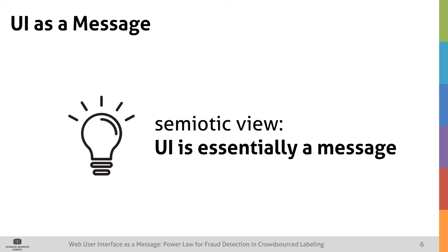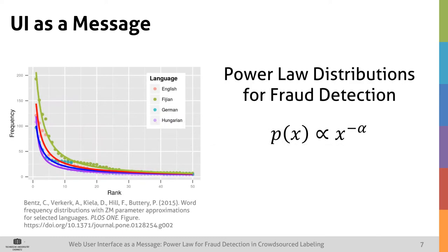Our idea for this paper is to follow the semiotic view and consider a user interface essentially as a message. For natural language texts, there are characteristics that allow us to distinguish between random texts and real texts. Most prominently, Zipf's law considers the rank frequency distributions of words, and random texts are known to not fit Zipf's law well. Now, if we can find similar characteristics for the elements in user interfaces, then we could use them for fraud detection in UI labeling. Zipf's law is basically a special case of a power law, and power laws have been successfully applied for fraud detection in other domains.